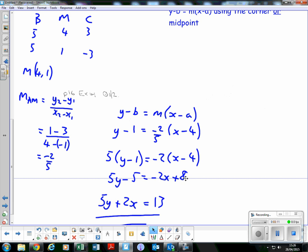Multiply out like we have done in all the previous lessons: 5y - 5 = -2x + 8. Add 2x to both sides to make the 2x positive on the left-hand side.